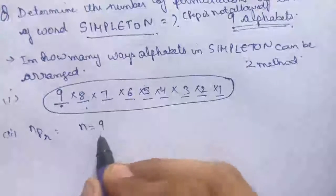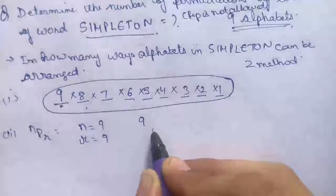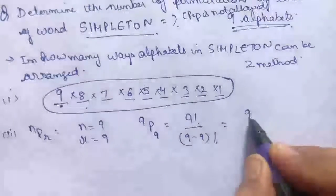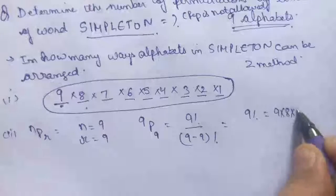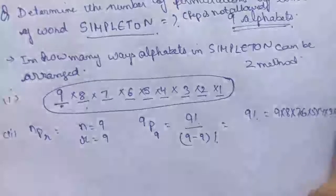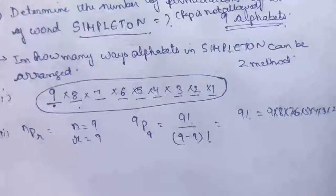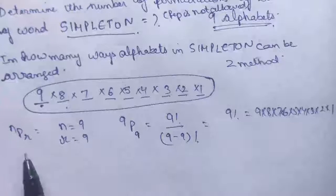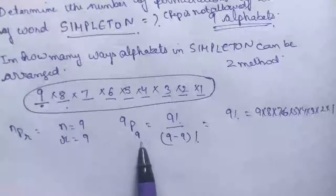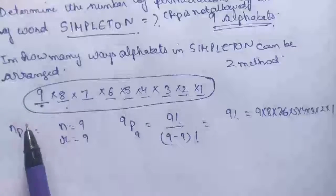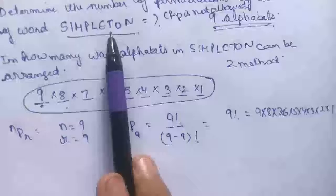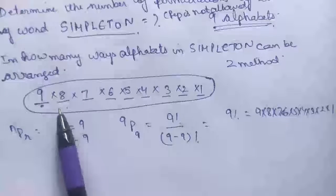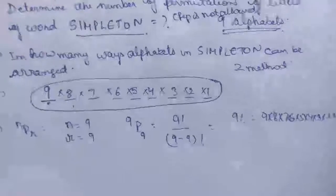The second method uses nPr: there are 9 different things to arrange in 9 positions, so n = 9, r = 9. The answer is 9P9 = 9! / (9−9)! = 9! / 0! = 9! = 9×8×7×6×5×4×3×2×1. Both methods are correct. Either use the formula 9P9 = 9!, or apply the multiplication principle: 9 options for the first place, then 8, 7, 6, 5, 4, 3, 2, 1.